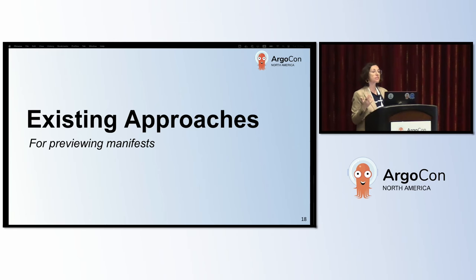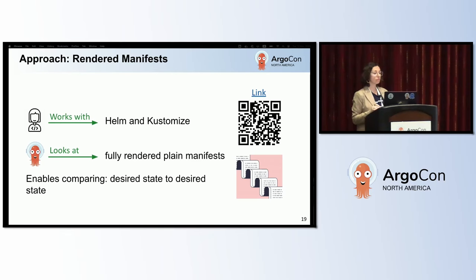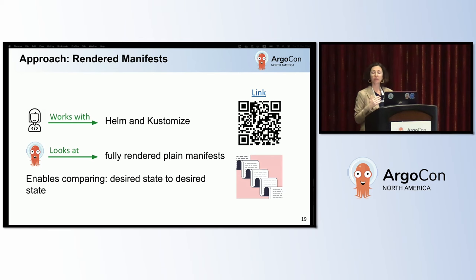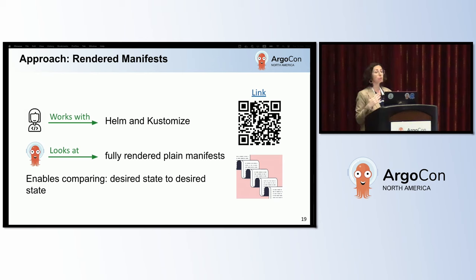Let's look at some existing tools and approaches for previewing diffs. The rendered manifest approach is based on the developer working with Helm and Kustomize, while Argo CD looks at the fully rendered plain manifests in another location in Git. Those manifests are rendered in the CI pipelines, which enables comparing desired state to desired state. The pros of this approach are that we have immutable manifests applied to the cluster as-is without any further changes, and the impact of our change is visible and clear.